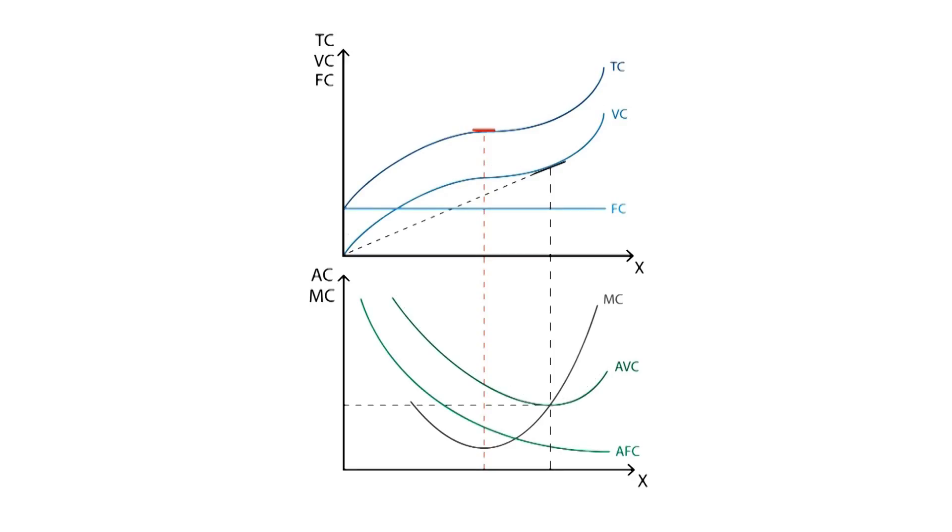We can use the same method as the one used for the variable cost in order to draw the average total cost, which is derived from the total cost curve. The average total cost will decrease, as long as the growth rate of the total cost in the upper graph is decreasing.